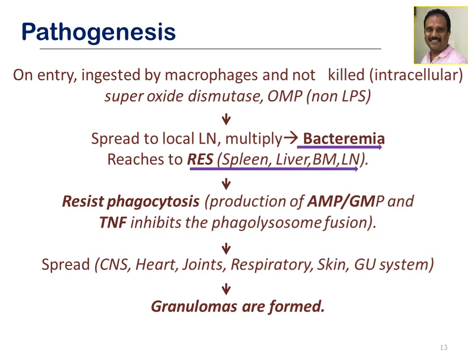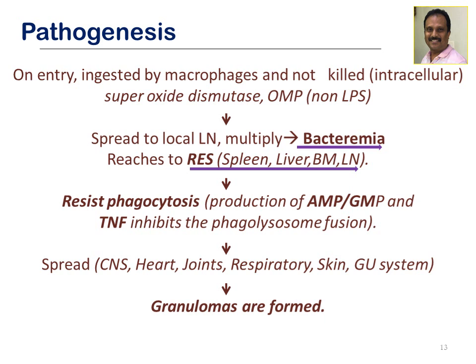From the bloodstream, bacteria reach the reticuloendothelial system — spleen, liver, bone marrow, and lymph nodes. Within phagocytic cells, they produce AMP or GMP and tumor necrosis factor, which inhibits phagolysosome fusion, impairing phagocytic activity. From the reticuloendothelial system they re-enter the blood and spread to the central nervous system, heart, joints, respiratory system, skin, and genitourinary system, where they produce small granulomas responsible for tissue and organ destruction.